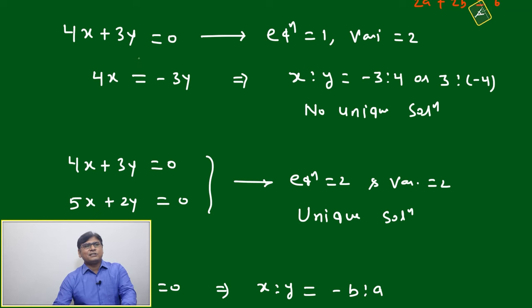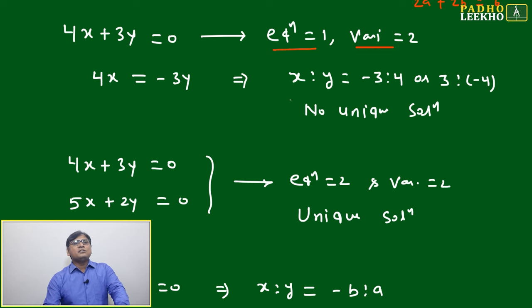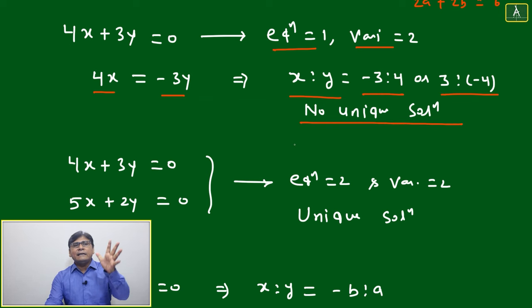Let's look at one simple example to understand this. 4x + 3y = 0, equation 1, variable 2. Can we solve it? No. But what we can do is: 4x = -3y, so x ratio y = -3 ratio 4, or 3 ratio -4. No unique solution, but we're getting an idea—it will be 3 ratio 4. If x is 9, y will be 12. If x is 18, y will be 24. That idea we got means the ratio we got. Here, infinite number of solutions maybe.